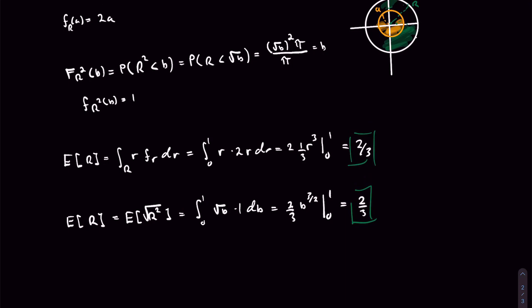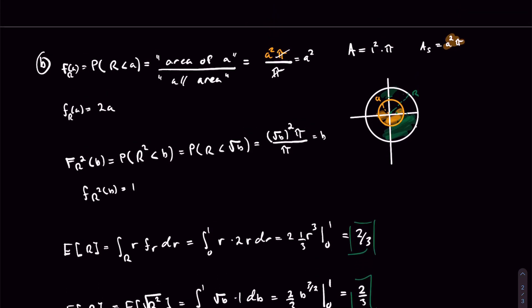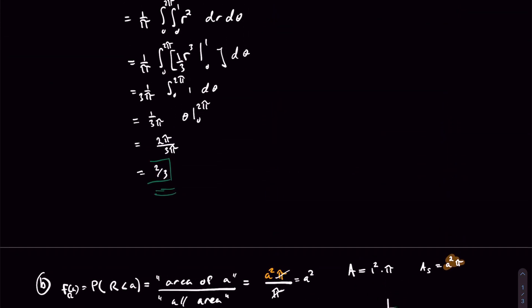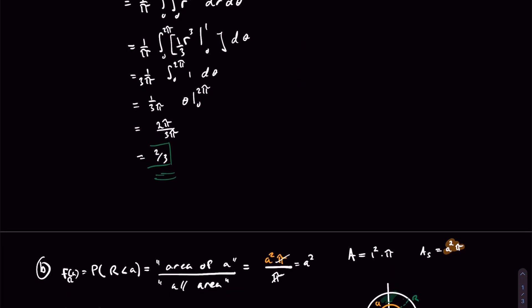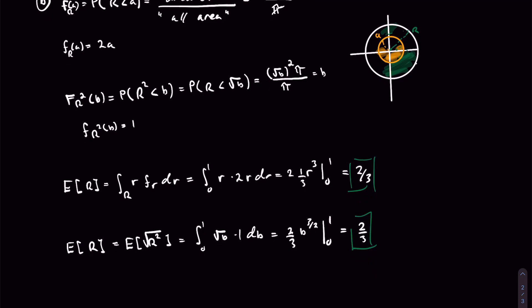That was a fun problem with a lot of tricks — using different properties of transformations, and even the Jacobian for the first time, which is really important in any transformations used in math and machine learning in general.